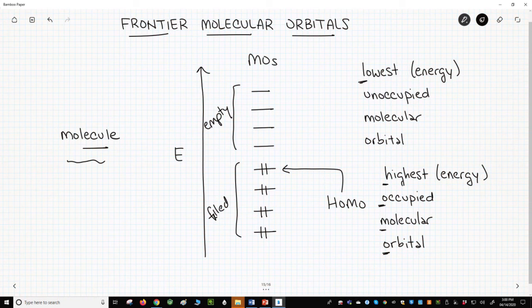The lowest unoccupied molecular orbital determines the electrophilicity of the molecule. This is the orbital through which the molecule accepts electron density.